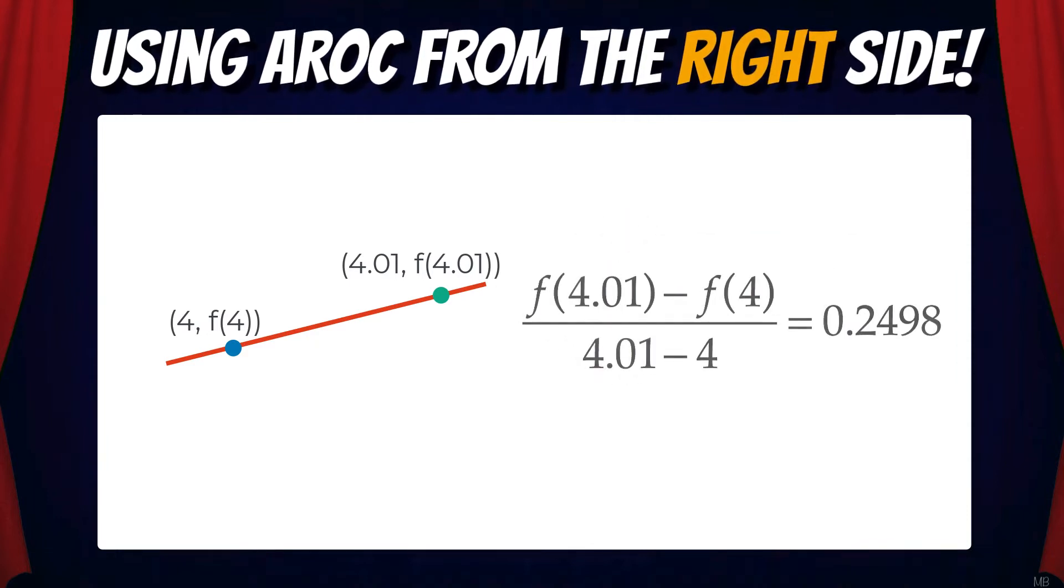Applying the average rate of change formula, we get f(4.01) minus f(4) over 4.01 minus 4. And using a calculator, that gives us 0.2498. This is an AROC from the right side.